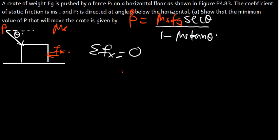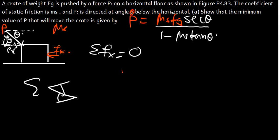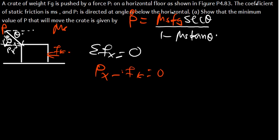We have P applied at an angle, so we need to get the horizontal component. We need to get the x-component Px and the y-component Py. This theta is the same angle, so we're going to have Px minus the friction force Fk equal to zero. So Px equals Fk, and Px is P cos theta, which equals mu_S times the normal force.